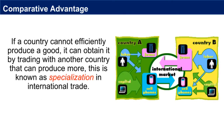Global trade allows rich countries to use their resources, whether labor, technology, or capital, more efficiently. Since countries are endowed with different assets and resources, some countries may produce the same goods more efficiently and therefore sell it cheaper than other countries. If a country cannot efficiently produce a good, it can obtain it by trading with another country that can produce more. This is known as specialization in international trade.